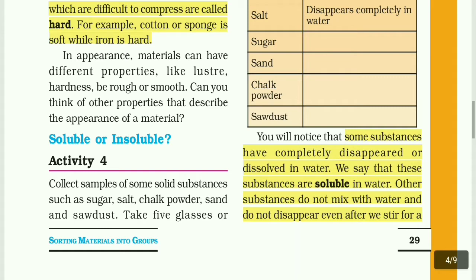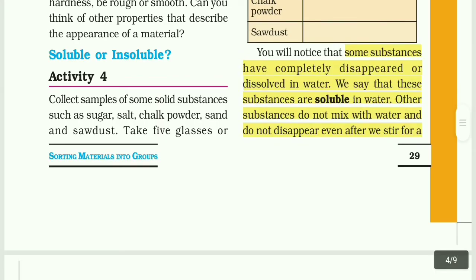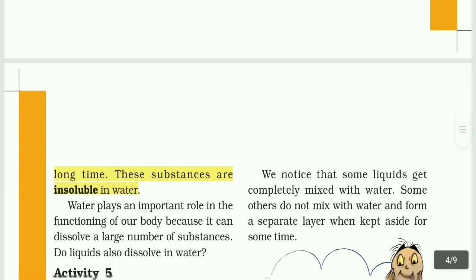One substance like sugar or salt will dissolve easily, so those substances are called soluble. Other substances do not mix with water and do not disappear even after stirring for a long time; these substances are called insoluble in water.